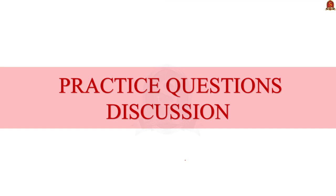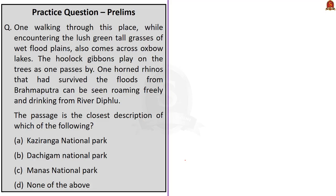Now let us practice prelims questions. First question — this question reads like a story: 'One walking through this place while encountering the lush green tall grasses of flat plains also comes across oxbow lakes. The Hoolock gibbons play on the trees as one passes by. One-horned rhinos that had survived the floods from the Brahmaputra had been seen roaming freely and drinking from River Diphu.' The passage is the closest description of which of the following? Option A: Kaziranga National Park. Option B: Dachigam National Park. Option C: Manas National Park. Option D: None of the above.